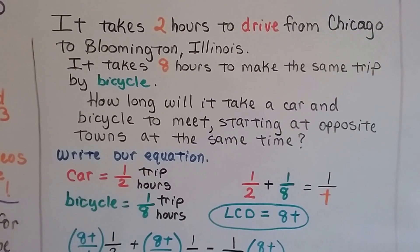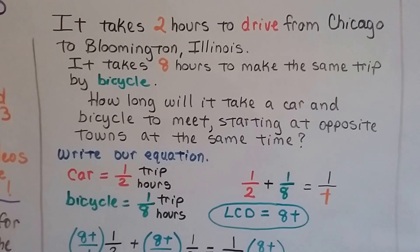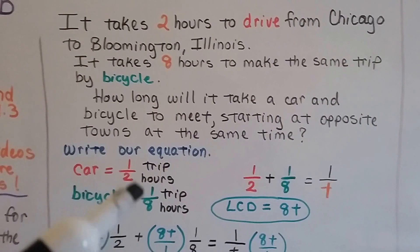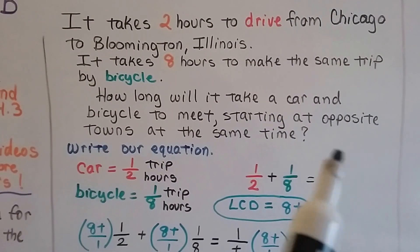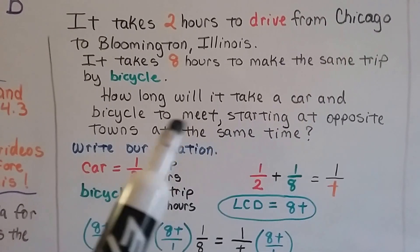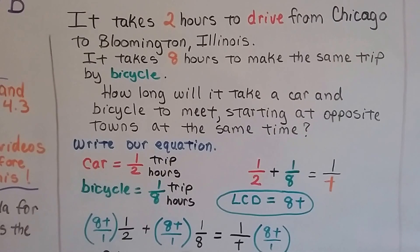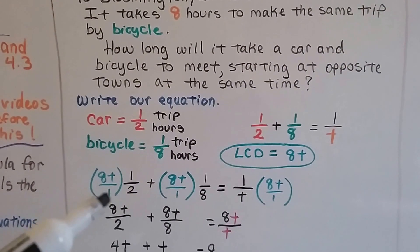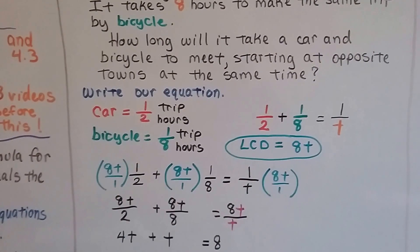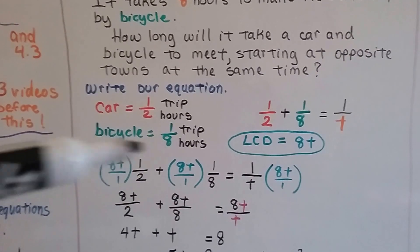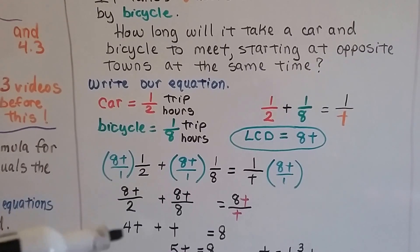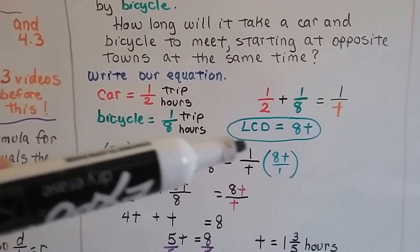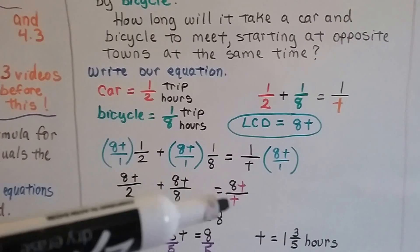So, if you know from our previous video how we can write our equation, we write the car as one trip is two hours, so it's one trip over two. The bicycle is one trip in eight hours, so it's one over eight. And we set it to equal one trip over the amount of time it's going to take them to meet somewhere in the middle. We need to find that least common denominator for a two, an eight, and a t. We can use eight t. We multiply every single term, even this one on this side of the equal sign, by that eight t. We can write it over a one, so we can just multiply straight across, right? So we get eight t over two, which is a four t. And this is an eight t over eight. This eliminates as a one, so we just have a t. And this is eight t over t, and those two t's eliminate as a one, so we just have an eight.